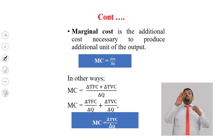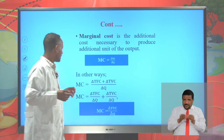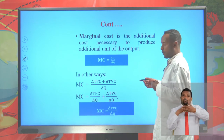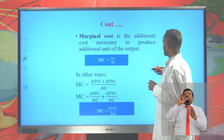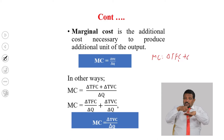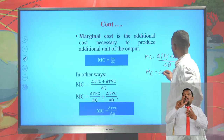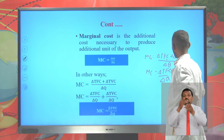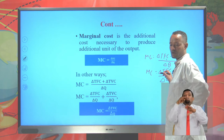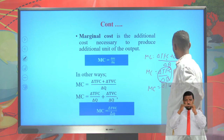The marginal cost (MC) is the additional cost incurred from producing one additional unit of output. Mathematically, MC = ΔTC / ΔQ. Since TC = TFC + TVC and TFC does not change, the change in TFC is always zero. Hence, the marginal cost equals the change in total variable cost divided by the change in output: MC = ΔTVC / ΔQ.